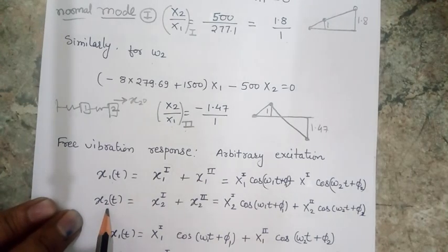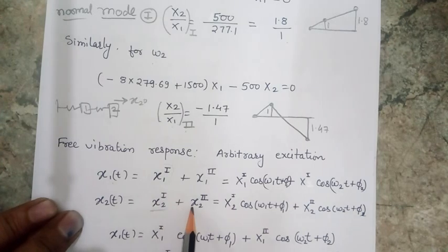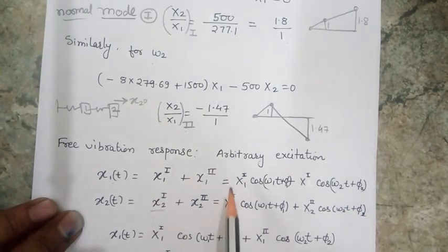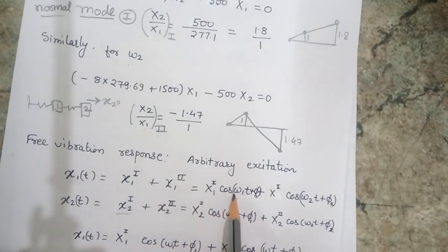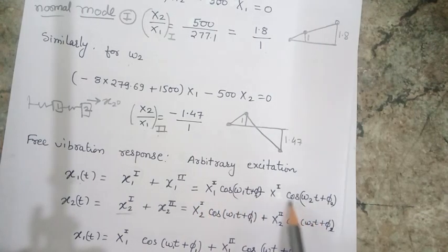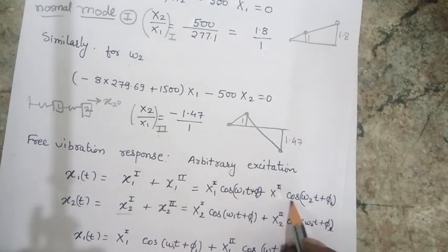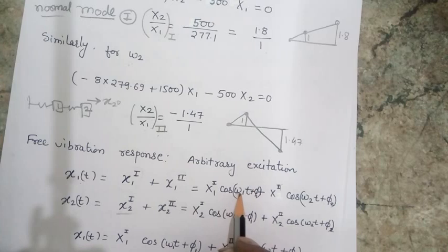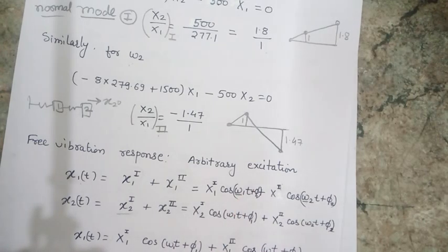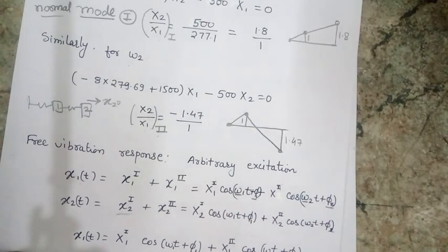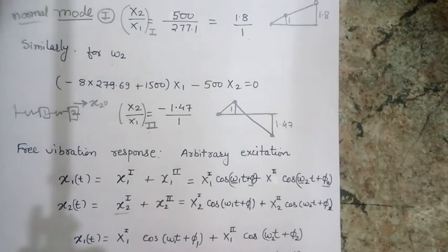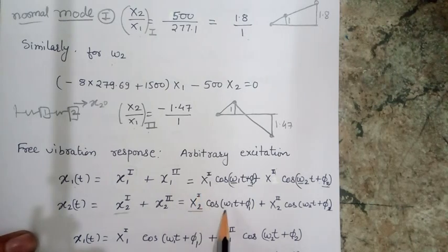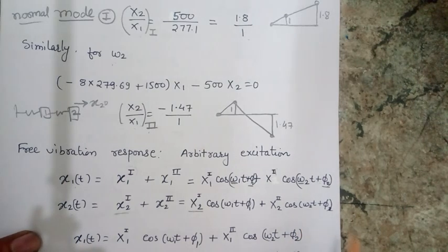Similarly, the response of the second mass is the contribution of x2 for the first mode and x2 for the second mode. Extending the equation, x1 = X1*cos(ω1*t + φ1) + X1(second mode)*cos(ω2*t + φ2), where ω1 is the first natural frequency, ω2 is the second natural frequency, and φ1 and φ2 represent the phase contributions. For the second mass: x2 = X2(first mode)*cos(ω1*t + φ1) + X2(second mode)*cos(ω2*t + φ2).